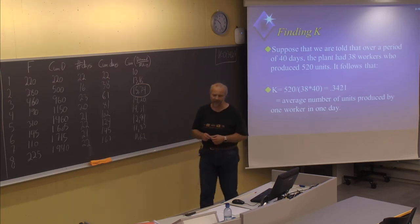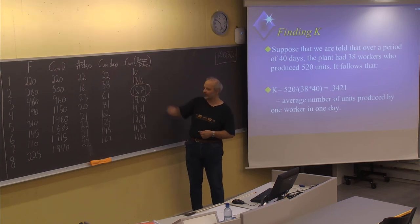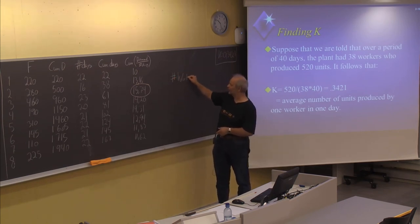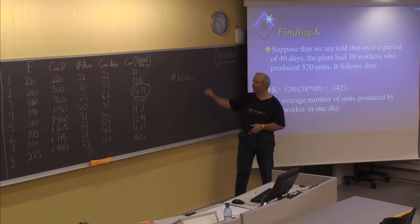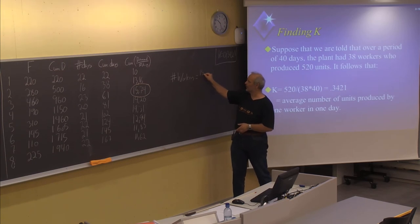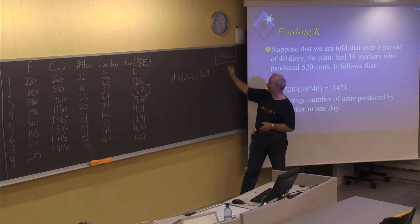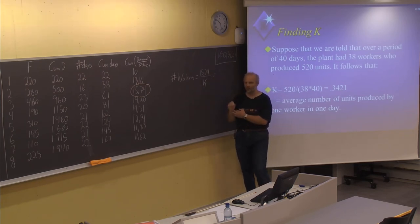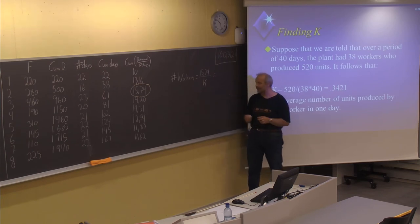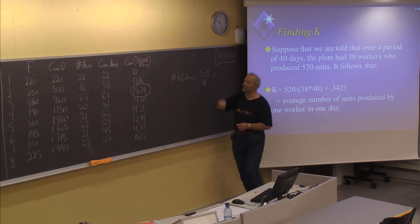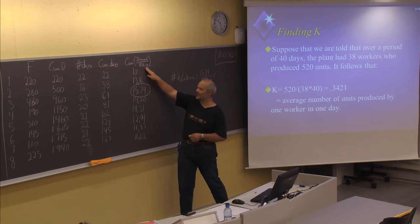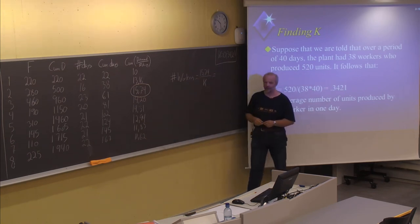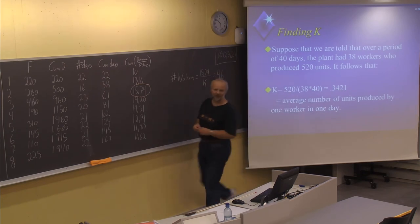We have the highest number in this column, 15.74, to find the number of workers. We take 15.74 and divide by K. K is the number of units produced per day per person on average. We divide the cumulative demand by the cumulative number of days in the critical month — March — then divide by the K factor. In this case, we get exactly 46 by some coincidence.